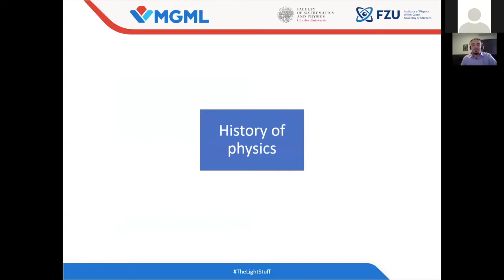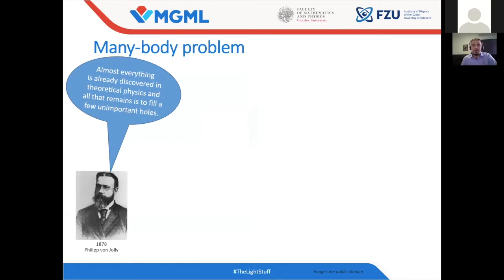As you probably know, every scientific talk starts with some famous photos of famous Nobelists in black and white, and I will do the same. We will start with a picture of Philipp von Jolly. This guy was a teacher of Max Planck — he was teaching in Munich — and Max Planck was asking him what he should study. Jolly basically advised him: definitely not go into physics, because physics is already discovered and there is nothing interesting anymore.